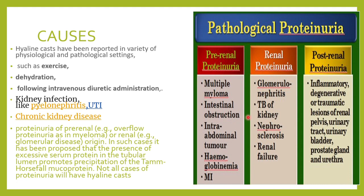Causes of hyaline casts can be divided as physiological and pathological. Physiological causes include heavy exercise, dehydration, vomiting, and fever. Intravenous diuretic administration can also cause hyaline casts. Pathological causes include proteinuria — whether pre-renal or renal — such as overflow proteinuria, multiple myeloma, glomerulonephritis, tubular nephritis, pyelonephritis, urinary tract infection, and chronic kidney disease, all due to precipitation of the Tamm-Horsfall mucoprotein.